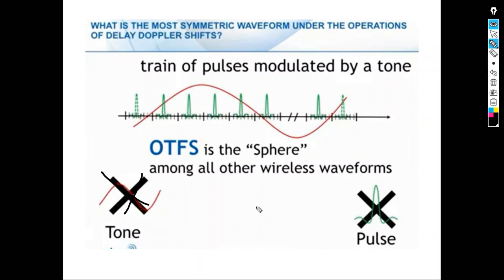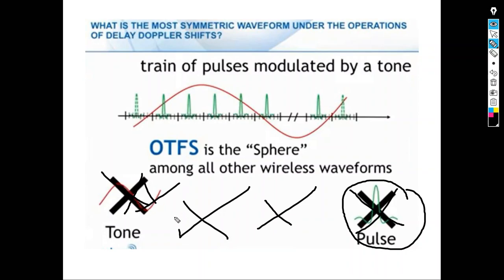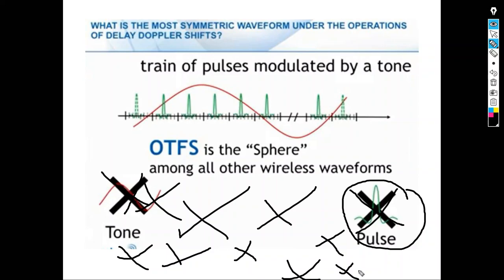The second guess was a pulse — like TDMA. You transmit a pulse, it hits objects, the channel operates on it, and at the receiver you cannot recognize it again. This is also not the optimal choice. When you run out of guesses, you start thinking in terms of math — you build the equations, write them down, and let theory teach you the answer. Instead of keep guessing, you develop the theory, solve the equations, and obtain the answer.